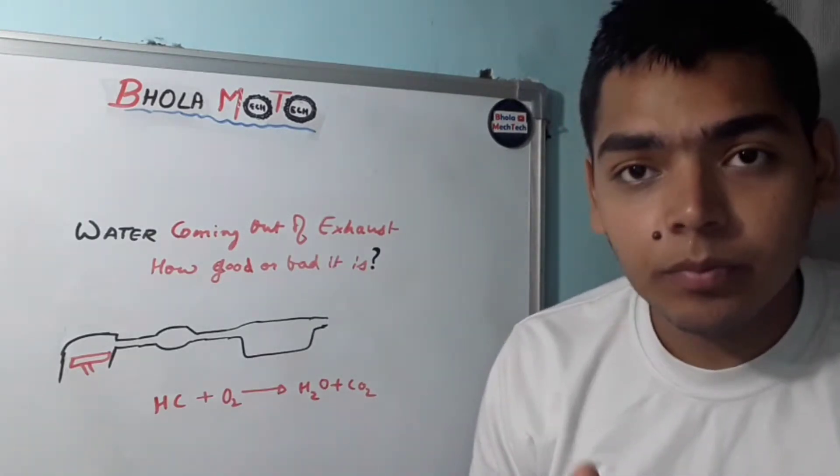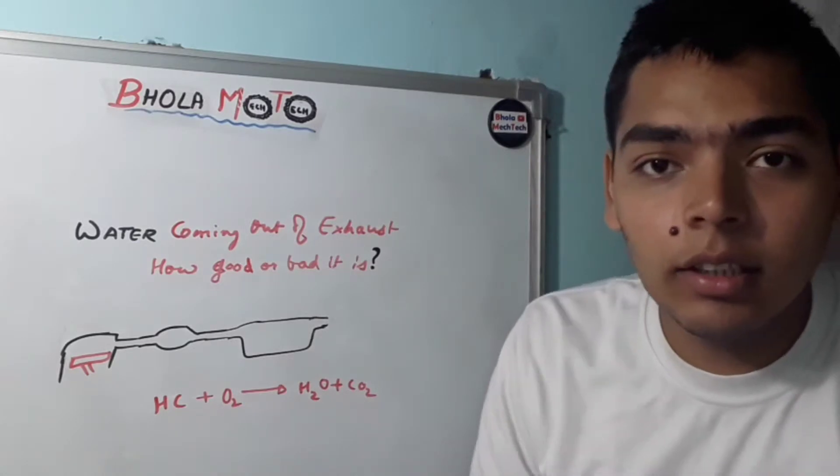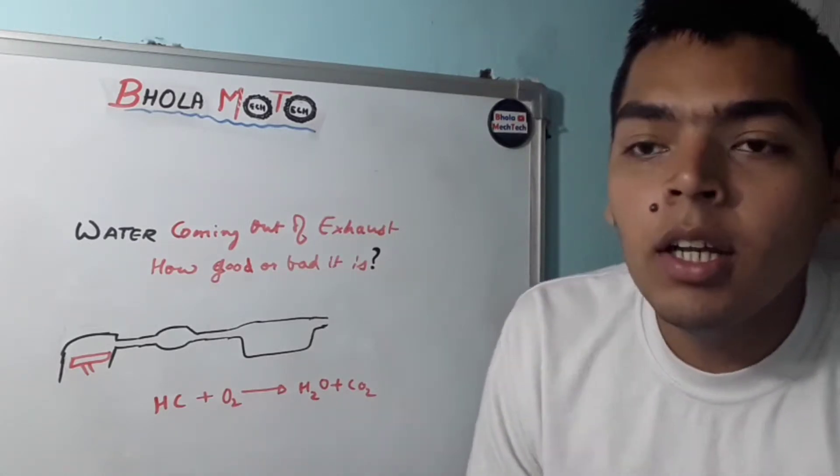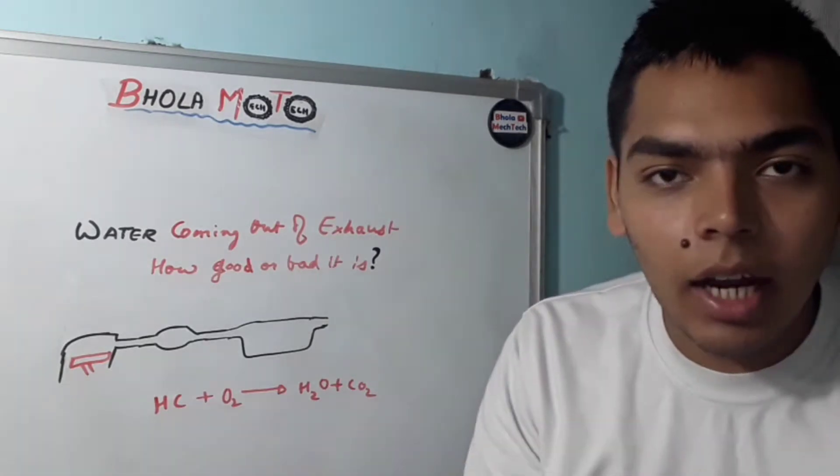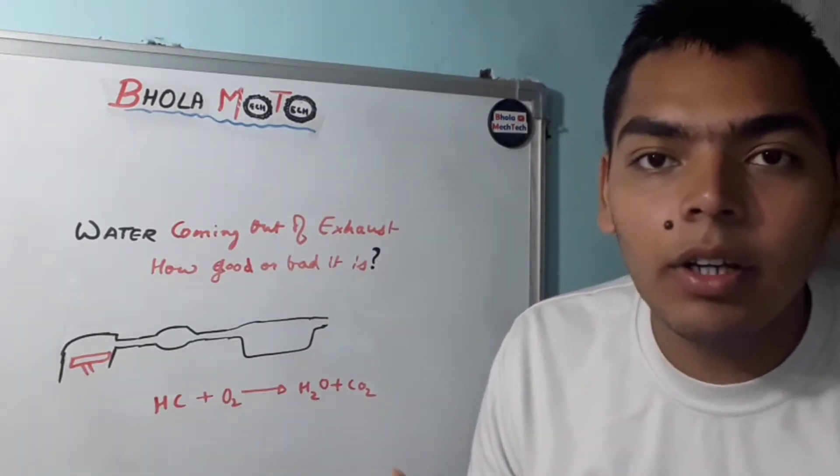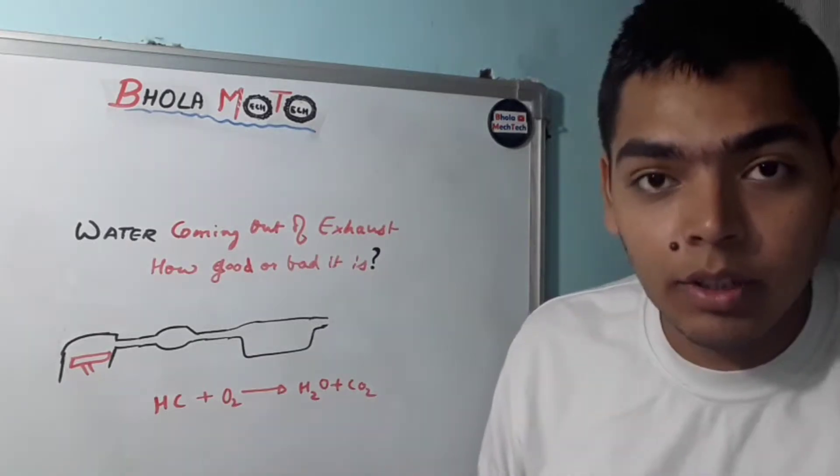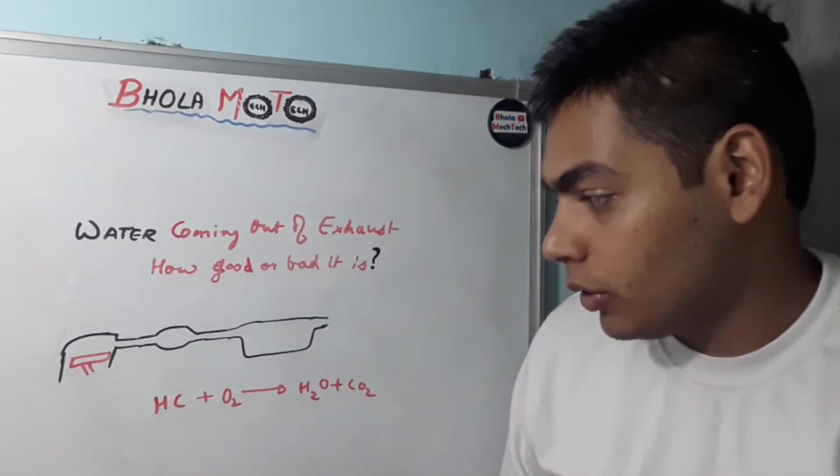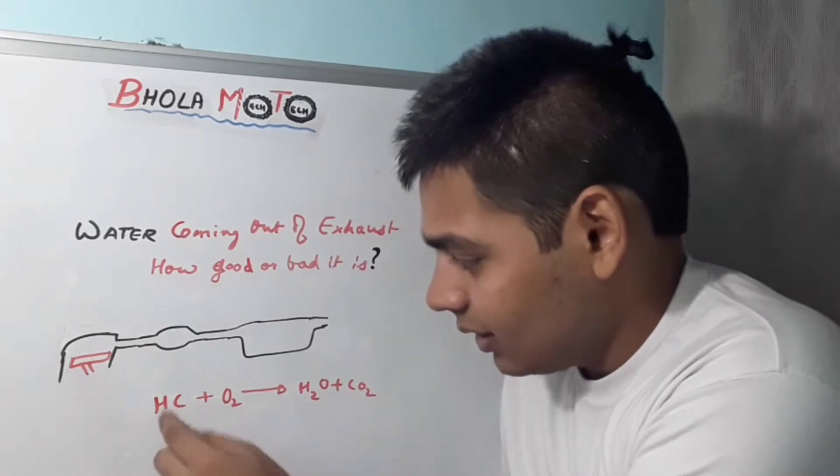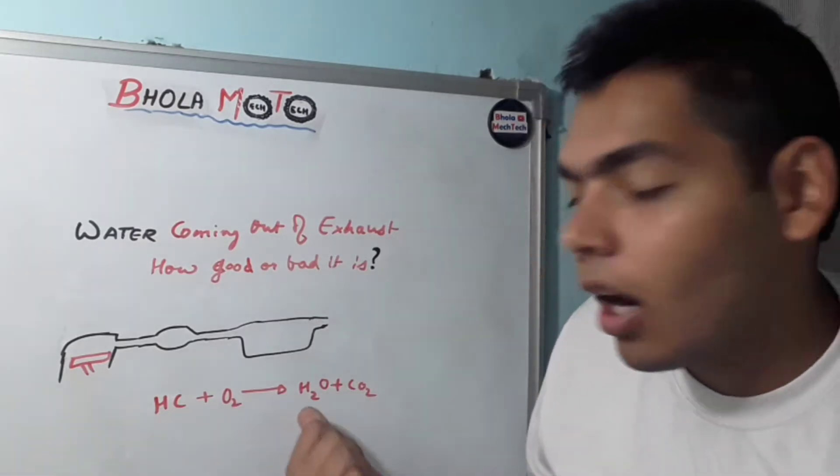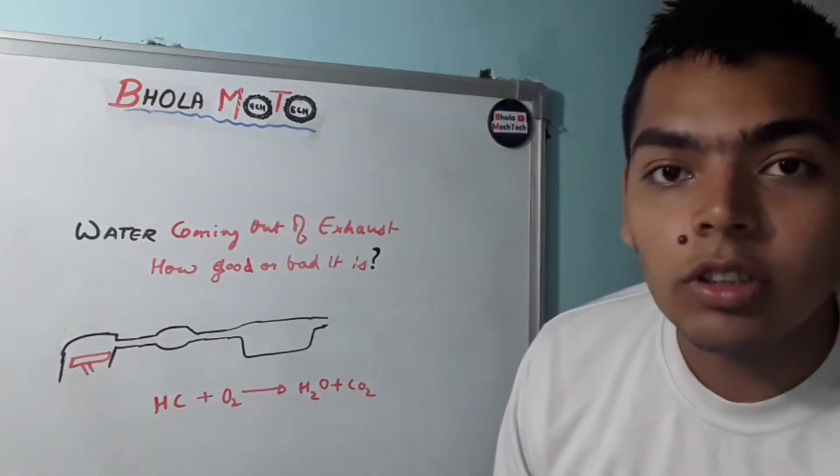The fuel is just a compound of hydrogen and carbon. Whenever it burns, this hydrogen and carbon break their bond and start making their bonds with oxygen, and hence the flame is produced. You can see HC when it reacts with O2, it makes H2O and CO2. So this is how water comes in the exhaust pipe.